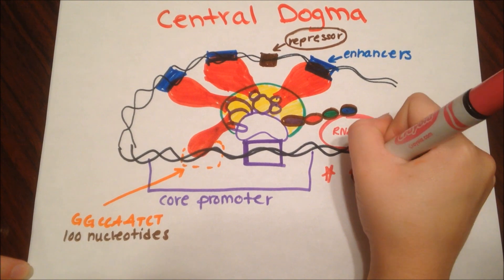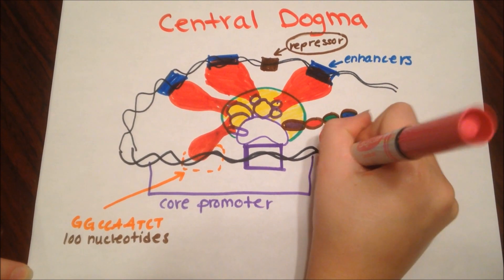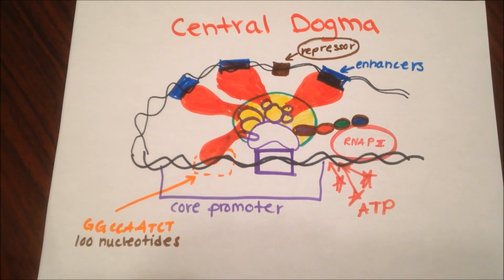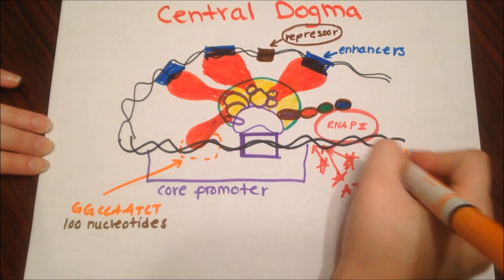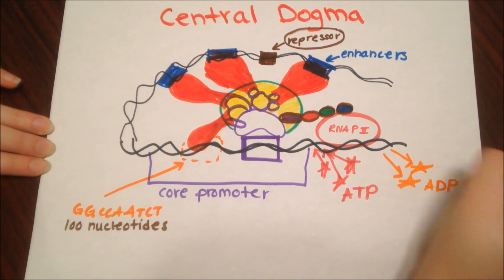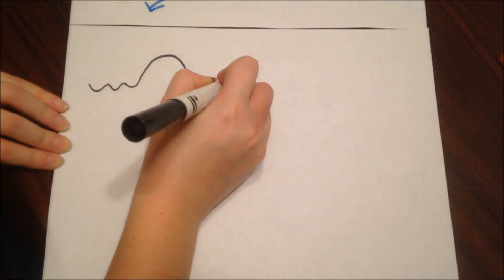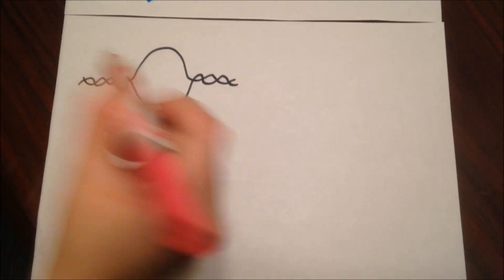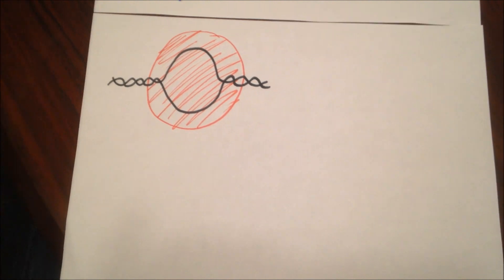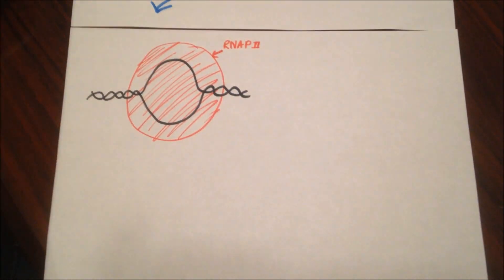Now that this structure is complete, ATP gets added to the complex to supply energy, then it gets changed to ADP. Now, the RNAP2 gets released. Here's the RNAP2. What it does is unzip the double helix, creating an open complex.